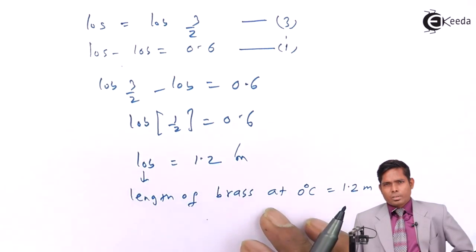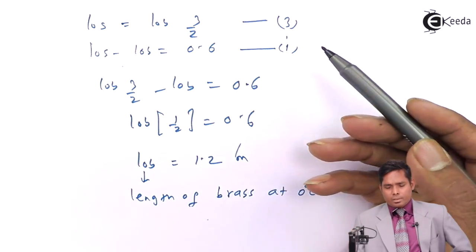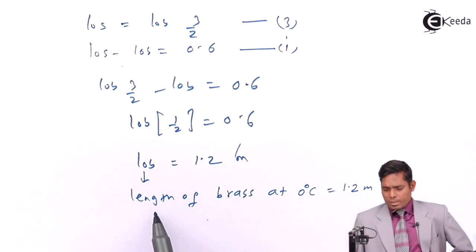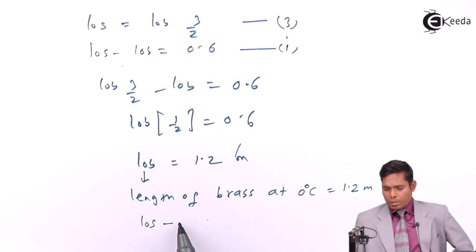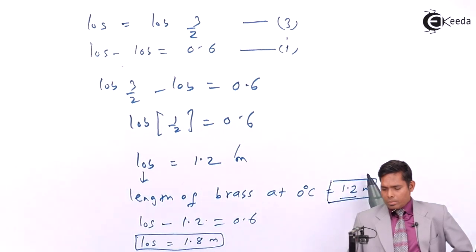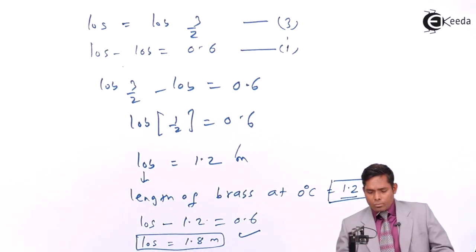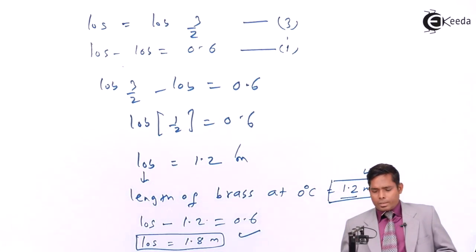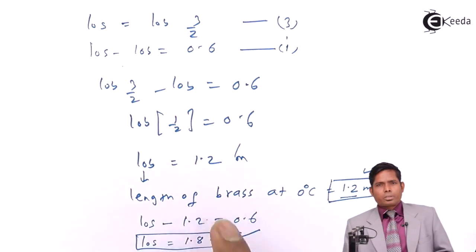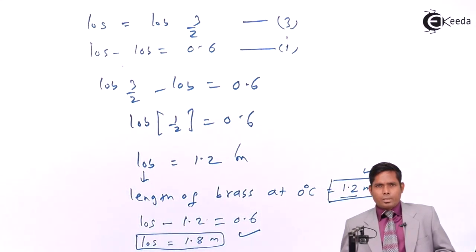Now, for the length of the steel rod at 0°C, we use equation number 1: L_0S minus L_0B = 0.6. Since L_0B = 1.2, we get L_0S = 1.2 + 0.6 = 1.8 meters. So the answer is that the length of the steel rod is 1.8 meters and the length of the brass rod is 1.2 meters at 0°C. The difference of 0.6 meters is satisfied by this result.